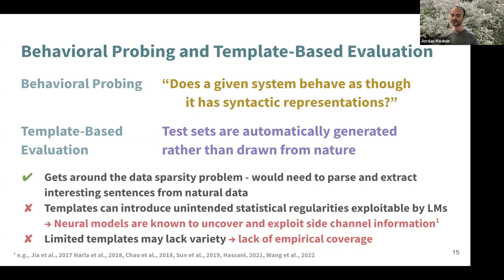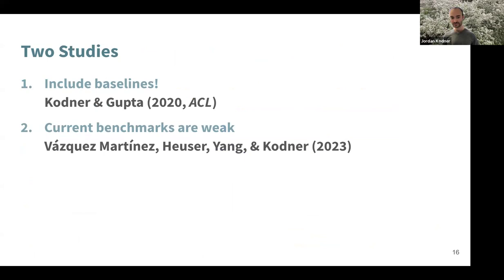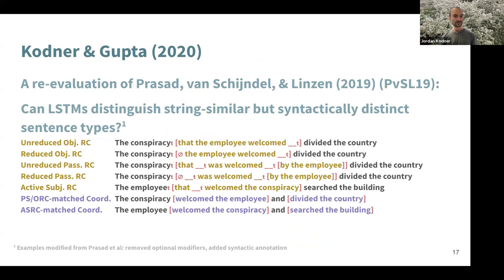Plus, if you've picked a handful of phenomena you're interested in and your templates lack sufficient variety, there may be a lack of empirical coverage in your tests. I've worked on two studies that approach this question. The first, from 2020, is a re-evaluation of a paper that asked: can LSTMs distinguish string-similar but syntactically different sentence types? The idea being that if they're syntactically distinct but string-similar and the model can distinguish them, it must be capturing syntax somehow.